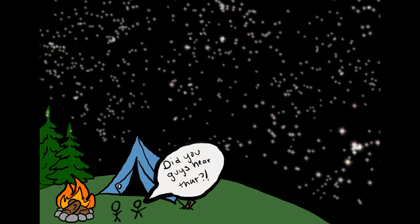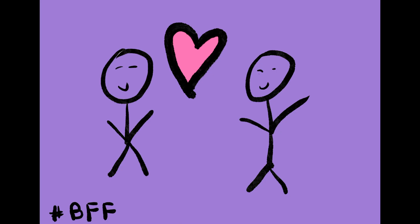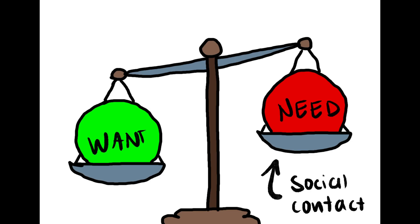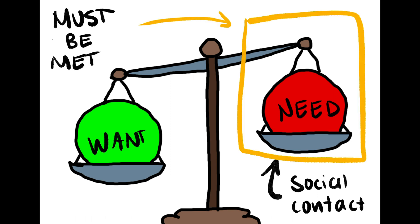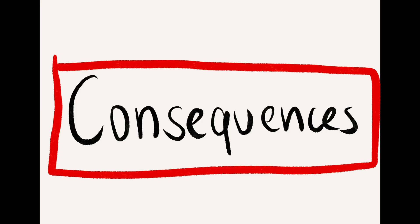While the environment may be less threatening than it once was, humans remain entirely social creatures. Humans have a need for social contact, and it is pertinent that this need is met for optimal healthy functioning. Failure to meet this need results in a variety of consequences, which will be expanded on in videos to come.